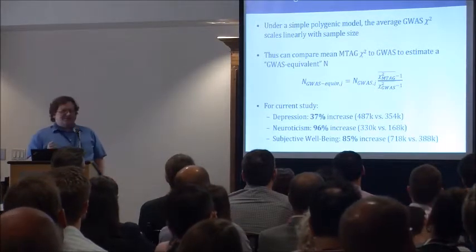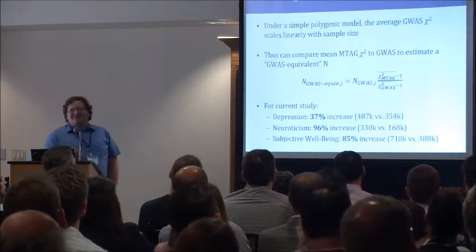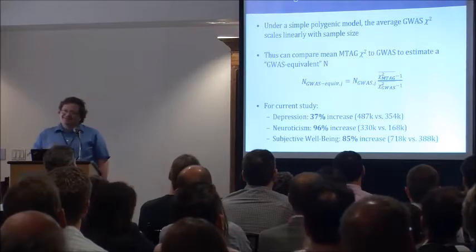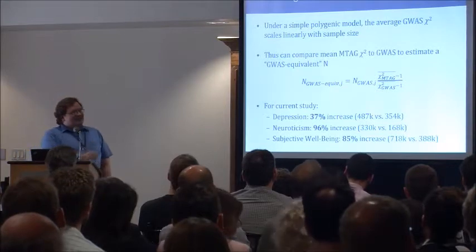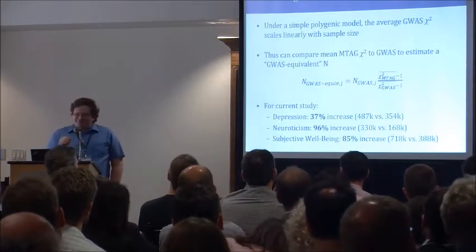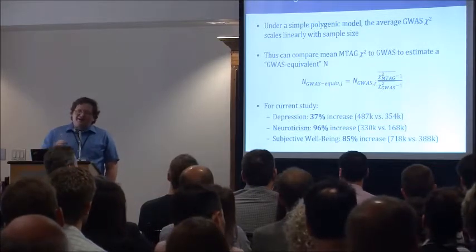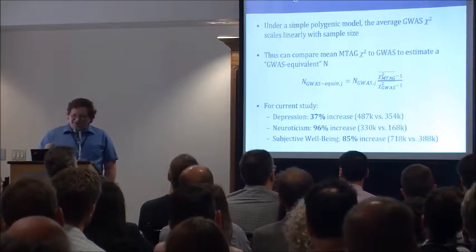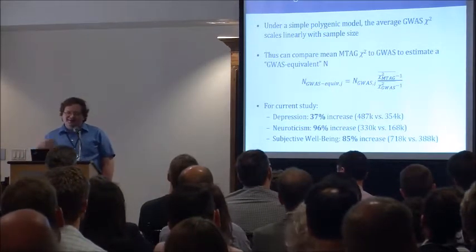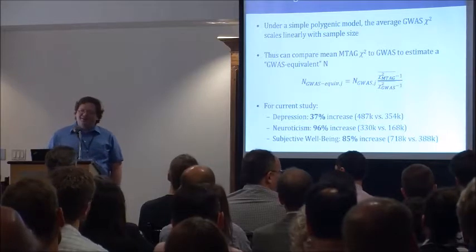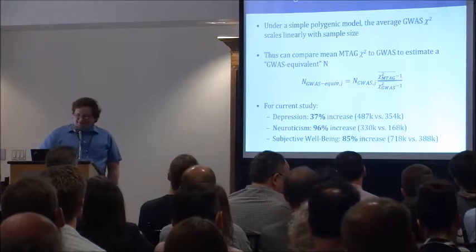None of these were small GWASs to begin with — neuroticism was the smallest at 168,000, and I wish all my smallest GWASs were 168,000. Even then, these are rather substantial gains in terms of number of individuals. We're fairly enthusiastic about how much information you gain by pooling with MTAG across phenotypes. Certainly this will be proportional to the degree of genetic correlation, the heritability, and relative sample sizes, but at least in this application we're definitely seeing the benefits.